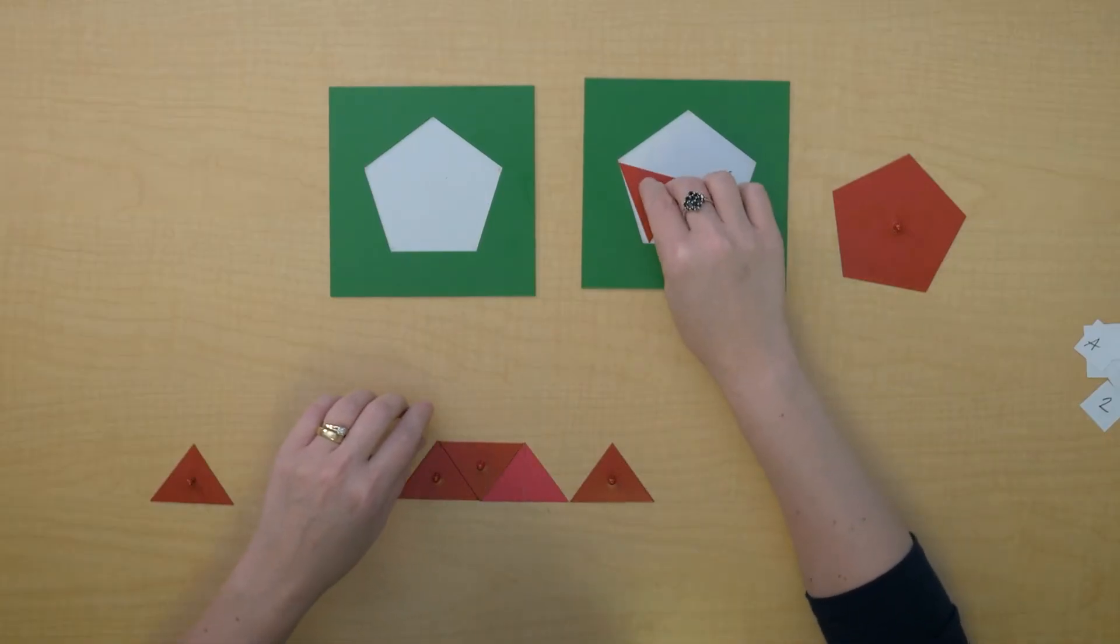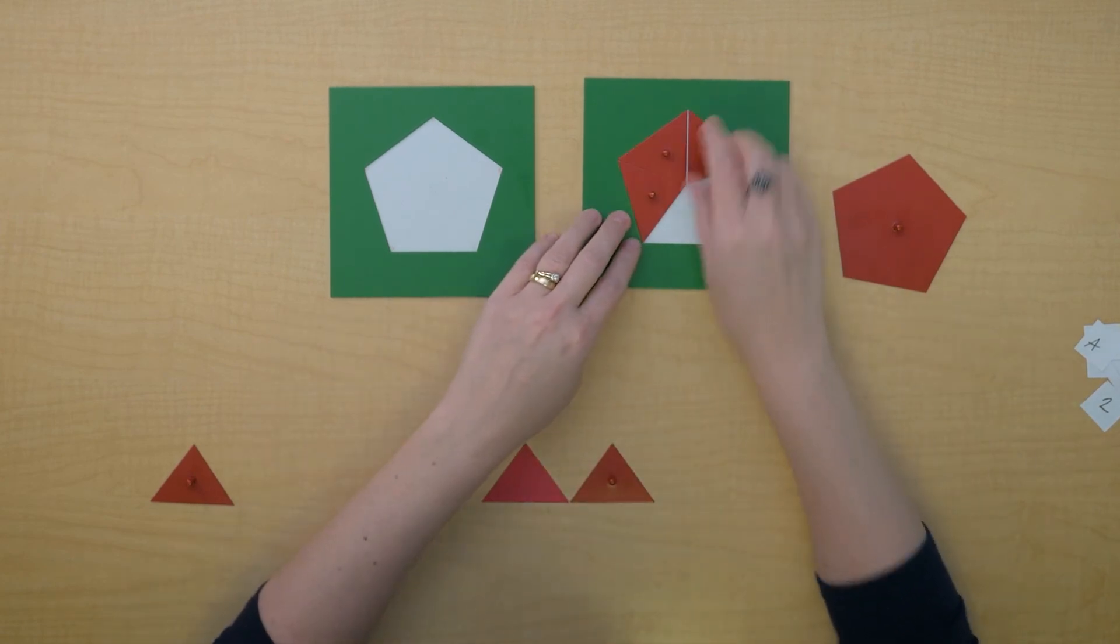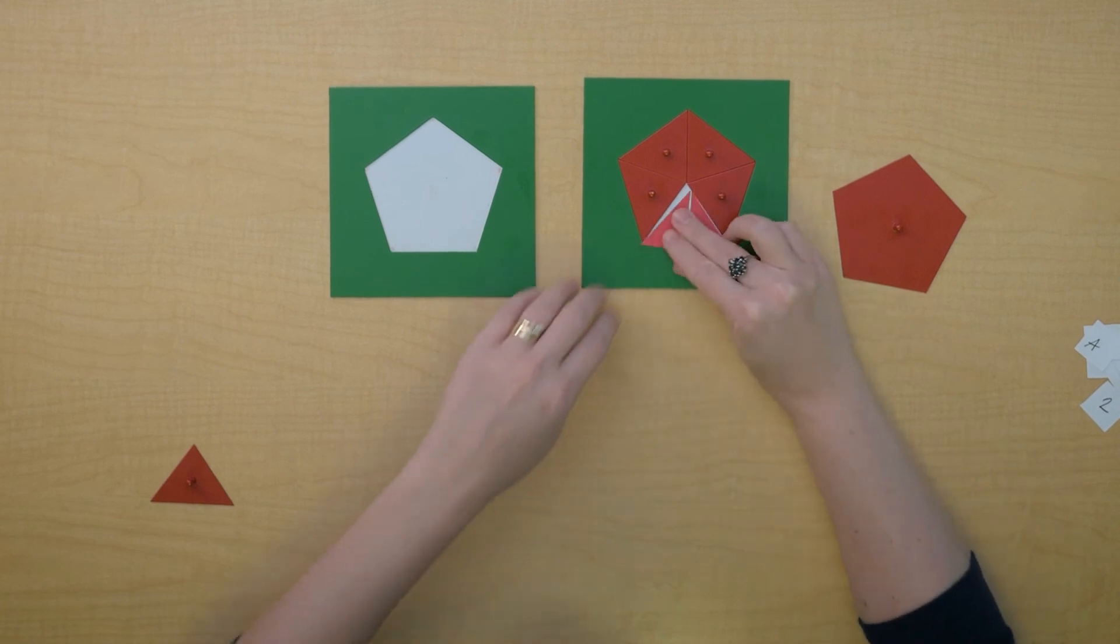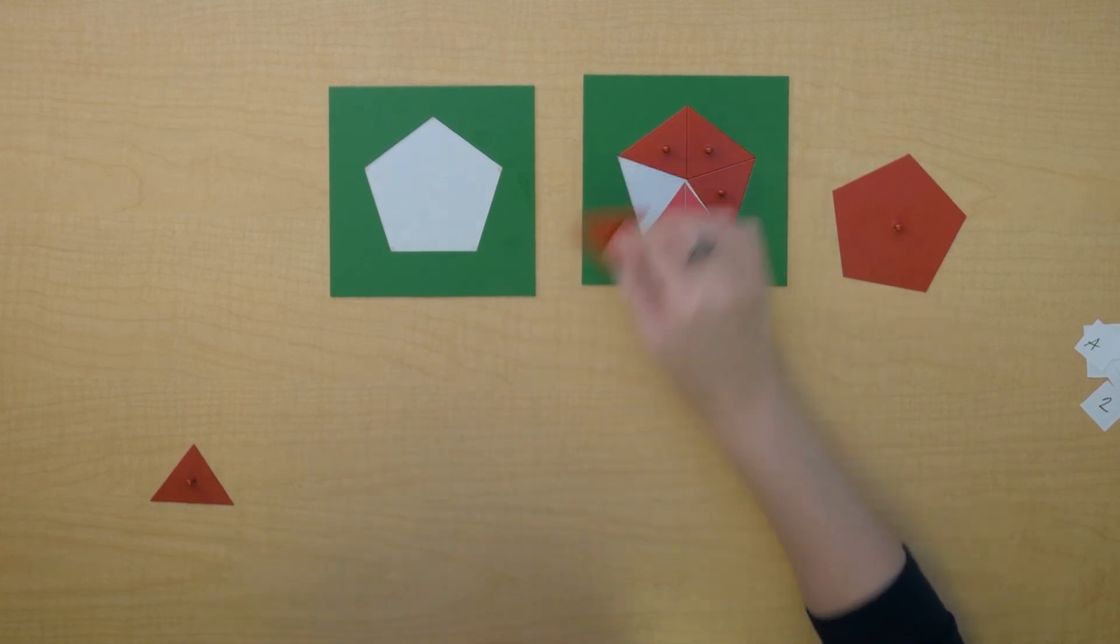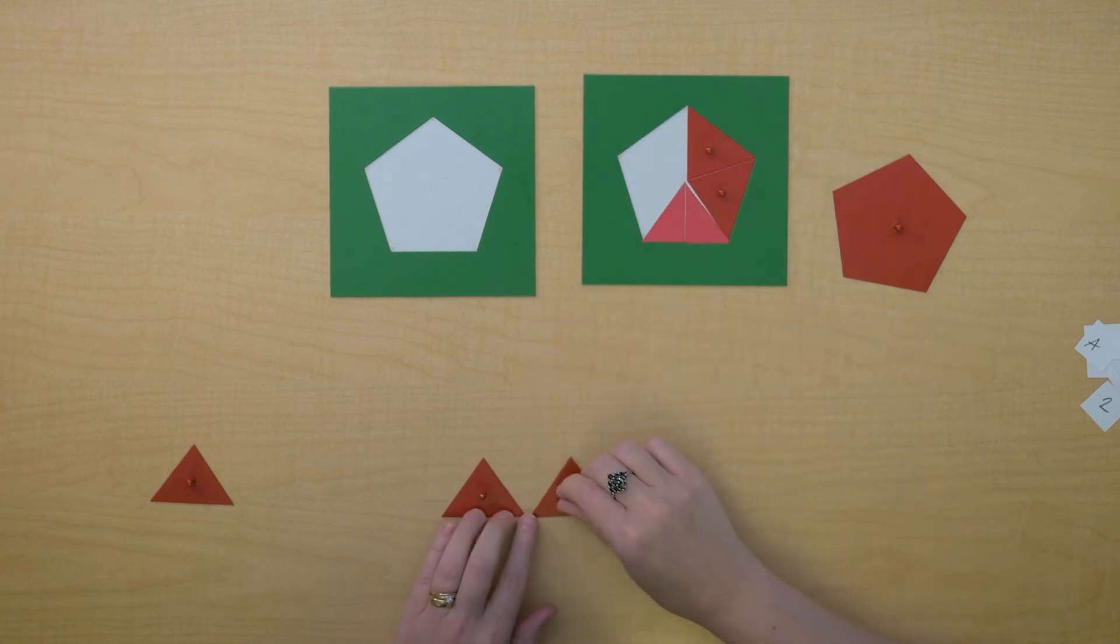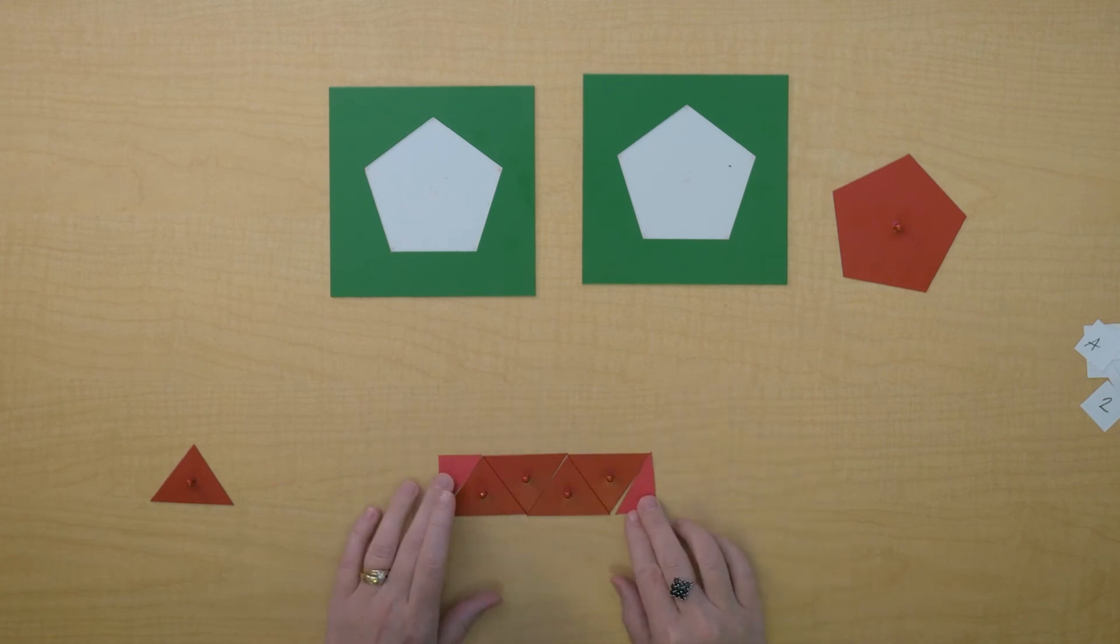Now, we could think about this in a different way. Let me show you. We could have our pentagon just like this and we could make it into a rectangle.